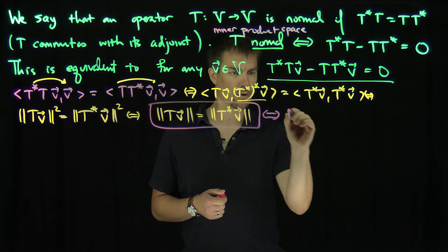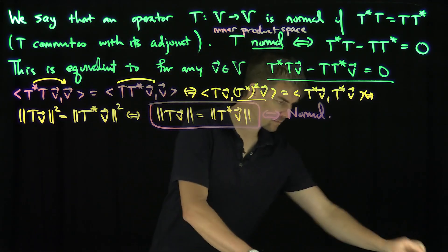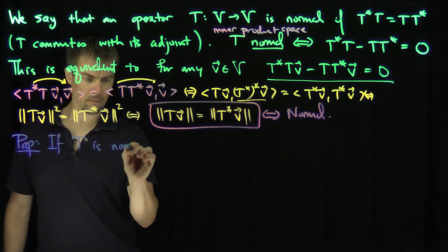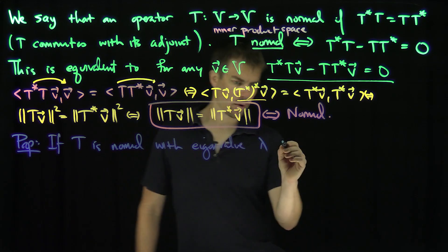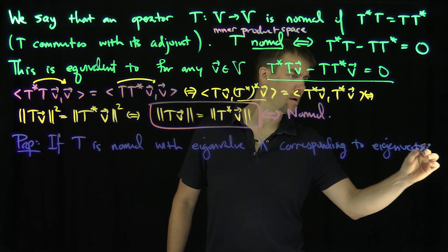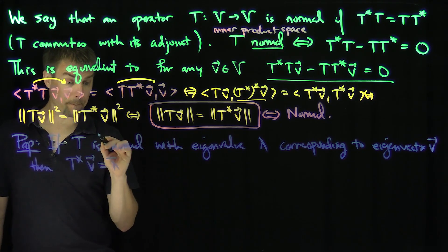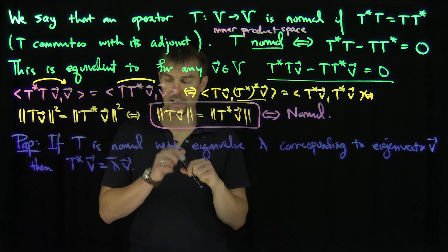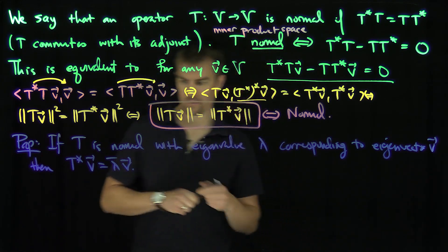Now let's relate the eigenvalues and eigenvectors of normal operators. Proposition: if t is normal with eigenvalue lambda corresponding to eigenvector v, then t-star of v equals lambda-bar times v. In other words, the adjoint has the same eigenvector corresponding to the complex conjugate of that eigenvalue.